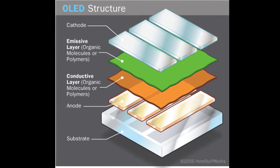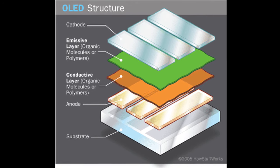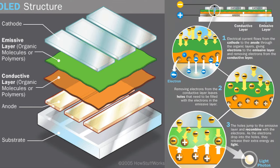You really only need to concern yourself with five layers of an OLED TV: the substrate, the anode, the conductive layer, the emissive layer, and the cathode. The substrate basically supports the OLED panel. The anode and cathode exchange current — they send current between them through the conductive and emissive layers. The conductive and emissive layers hold the organic molecules or polymers, and when these are subjected to current from the anode or cathode, they light up and produce photons.